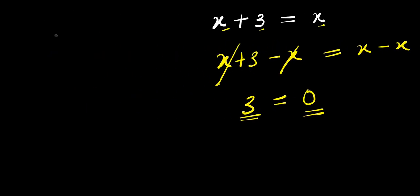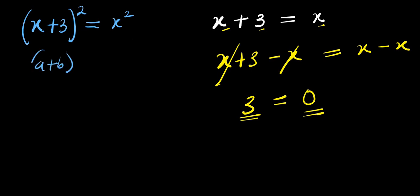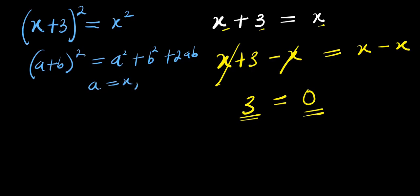Now let's consider this other approach. I have x plus 3 equals x. I'll raise this to the power of 2, I'll raise this to the power of 2. If you have a plus b to the power of 2, this equals a squared plus b squared plus 2 times ab. Now, a is x and b is 3, so what we are going to do will be to make use of this identity.